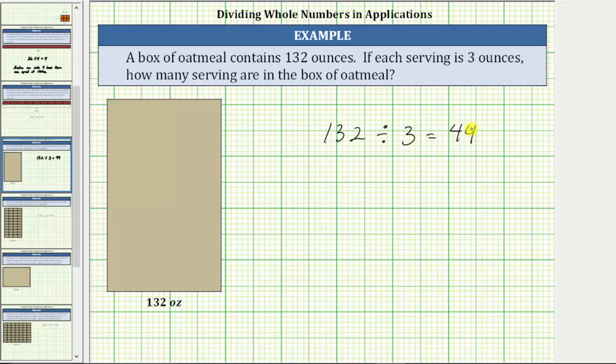Which means there are 44 three ounce servings in 132 ounces, or there are 44 copies of three in 132. As a complete sentence, the box of oatmeal contains 44 servings.